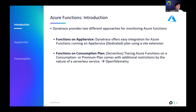We also have Azure Functions running in Consumption Plans. These are offered in a serverless fashion, meaning we do not have access to the underlying host powering these functions. This has some restrictions — we cannot install one agent there because we don't have access to the underlying infrastructure, and these functions have to be monitored using OpenTelemetry.